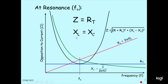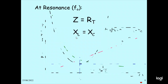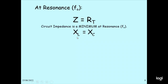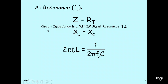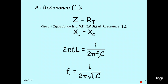At resonance frequency F0, Z equals Rd, and XL equals XC. So the impedance is minimum at resonance frequency. The resonance frequency can be calculated: at resonance, 2πF0·L equals 1 divided by (2πF0·C). Therefore F0 can be calculated as 1 divided by (2π times the square root of LC).